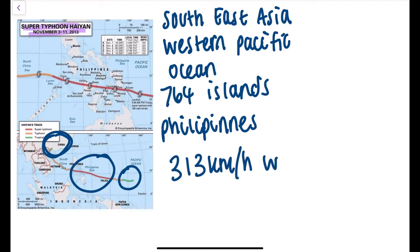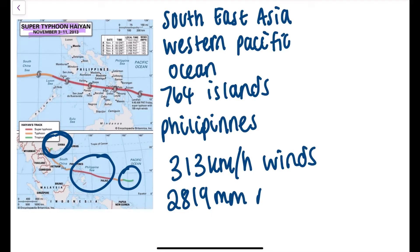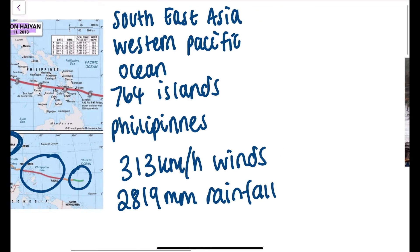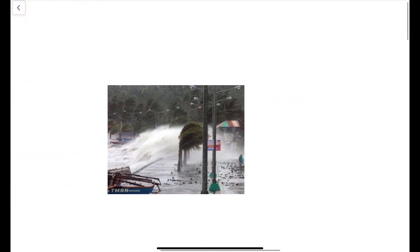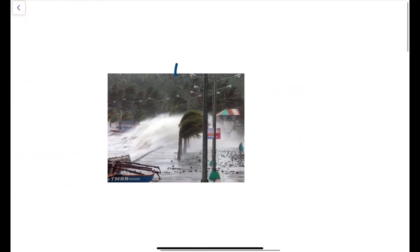It hit landfall in China, and this is where the storm stopped because it no longer had the energy it needed. A few primary effects: 313 km per hour winds, as well as 2,819 mm of rainfall.